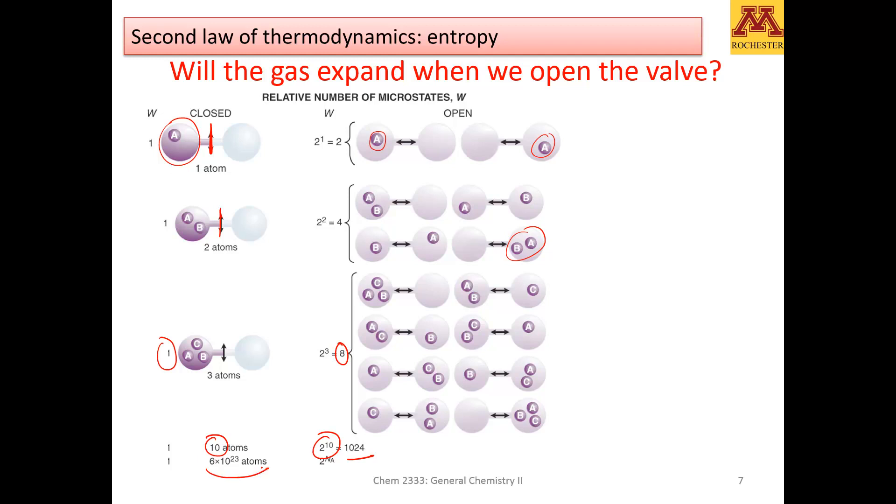And if I have one mole of atoms, the number of combinations is 2 to the Avogadro's number. That's a large number.